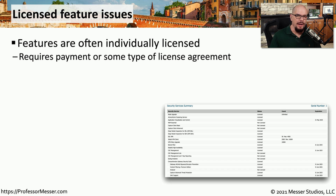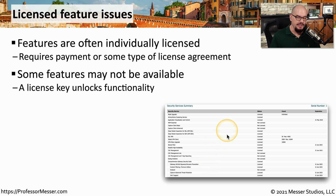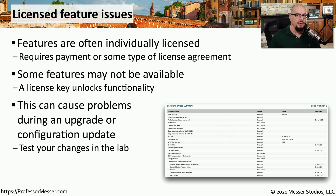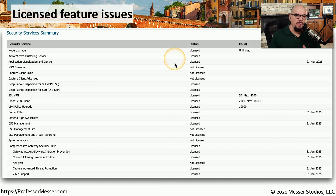When configuring a firewall, router, switch, or other network infrastructure device, there are many features that can be enabled or disabled based on licenses — you pay for the license to enable that feature. Some features may be unavailable because the license hasn't been purchased. This can cause problems if you create a configuration in your lab based on one set of licenses, but those features are not enabled on production devices, causing your configuration to fail. Before rolling out configuration changes, examine what is licensed on the remote devices and make sure your lab configuration matches the licensing for your production equipment.